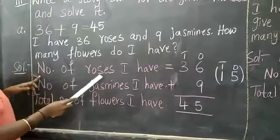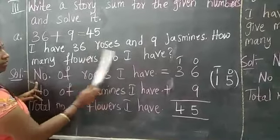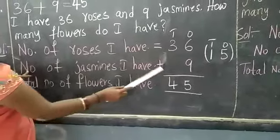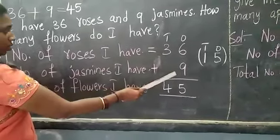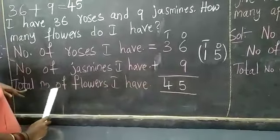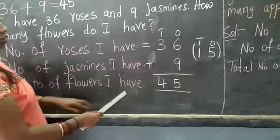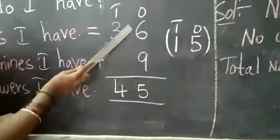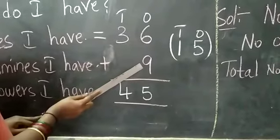Now we are going to solve this story sum children. Number of roses I have is 36. Number of jasmines I have 9. Total number of flowers I have how much? 6 plus 9. 6 plus 9 is how much children? 15.